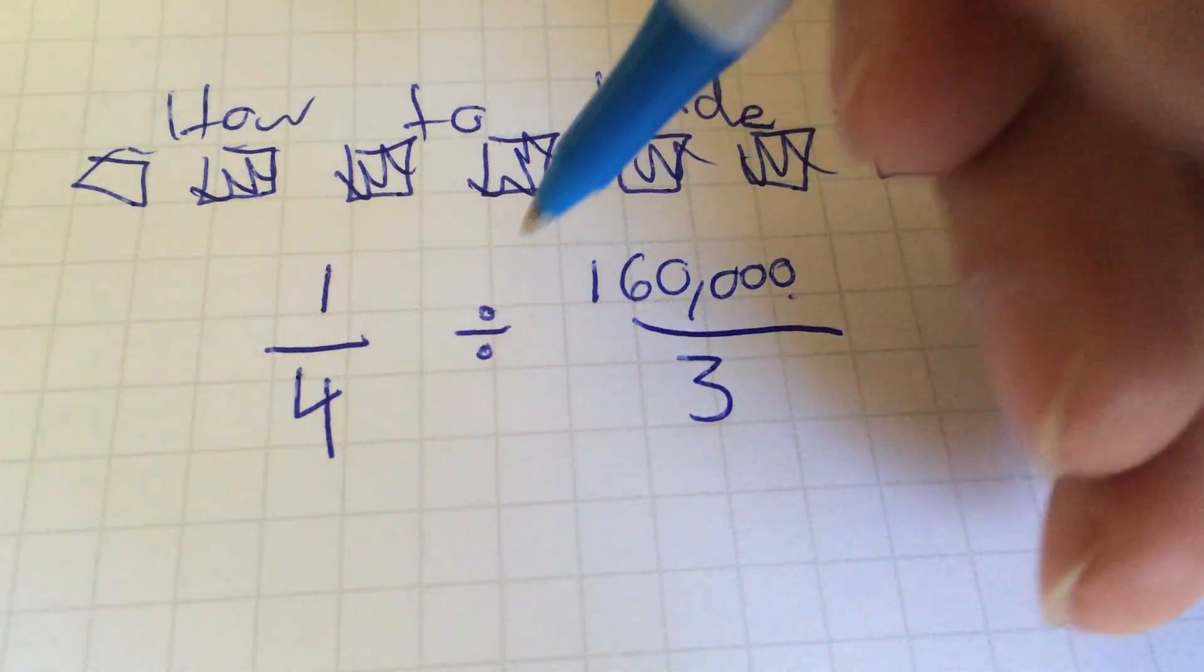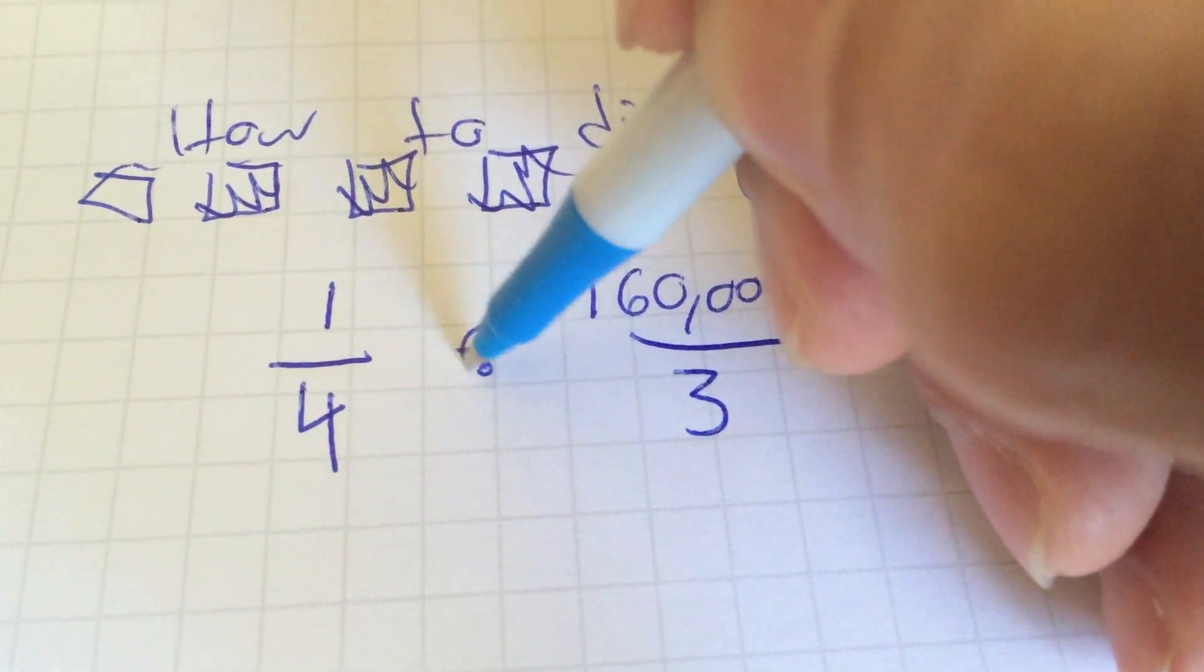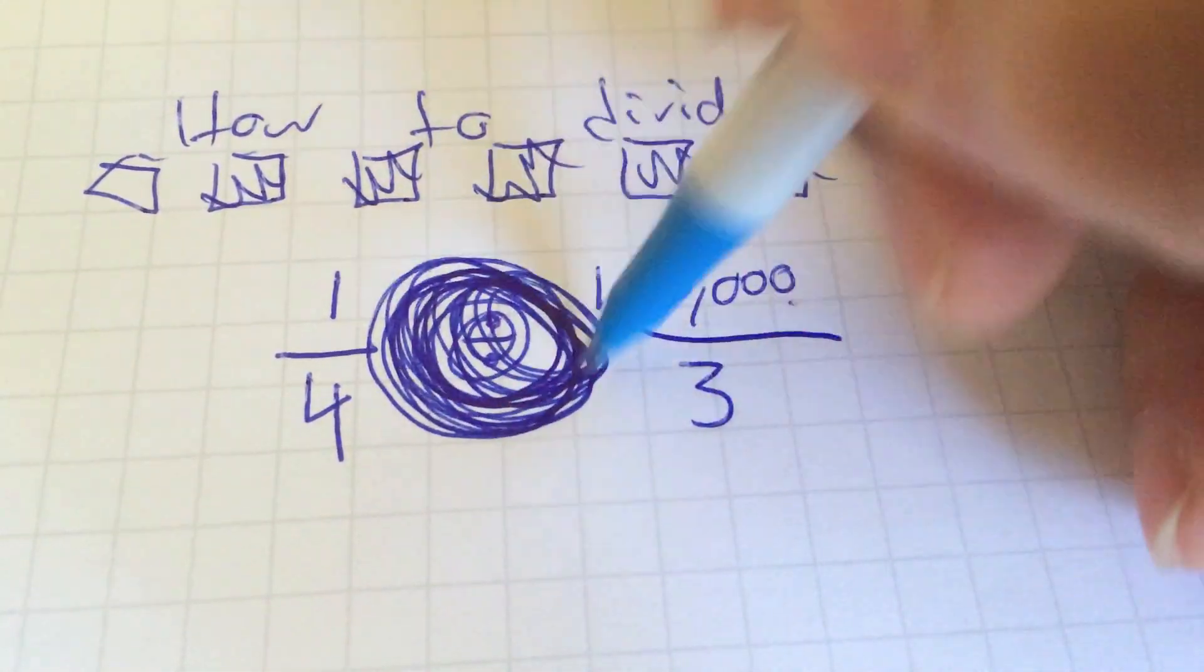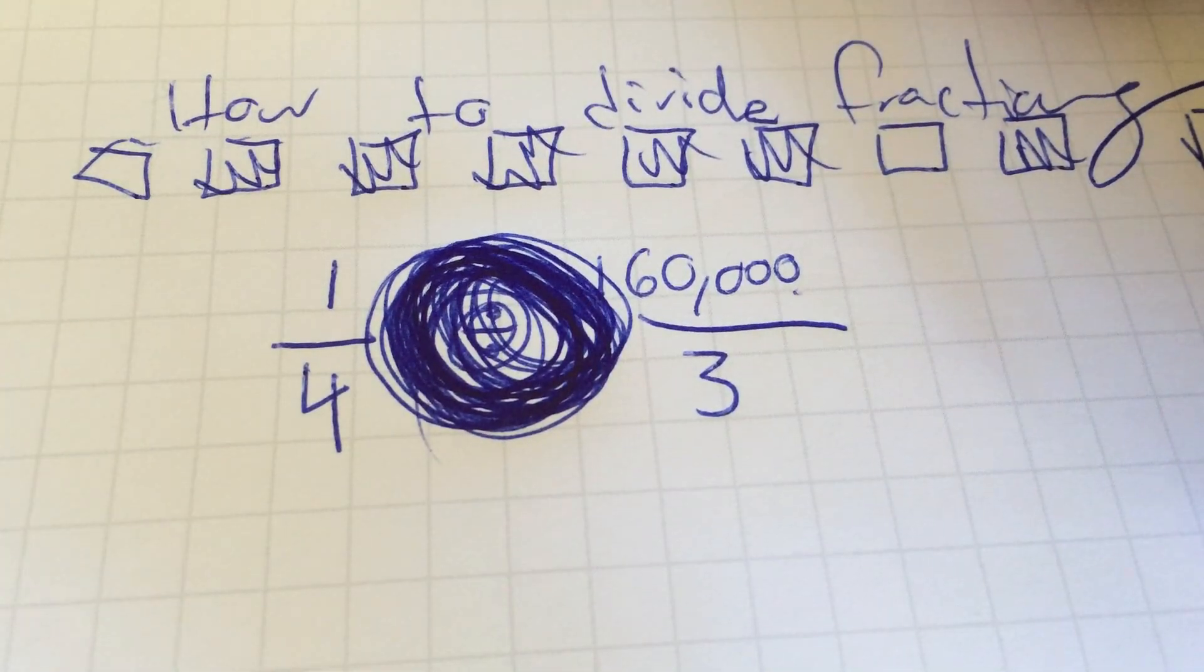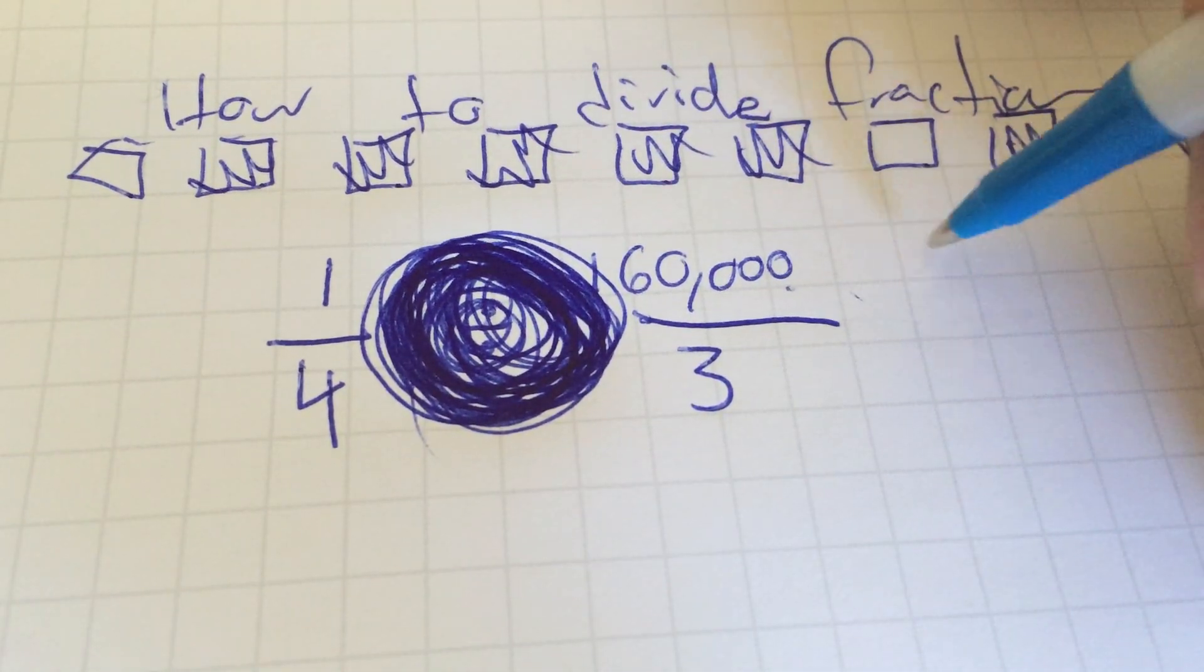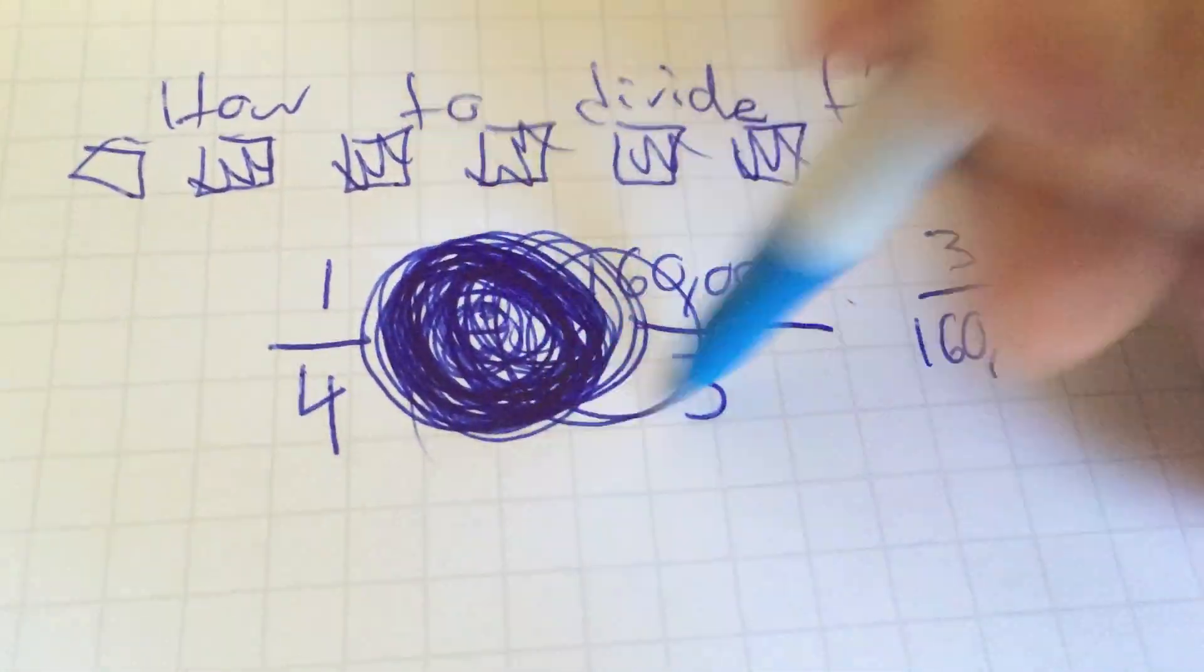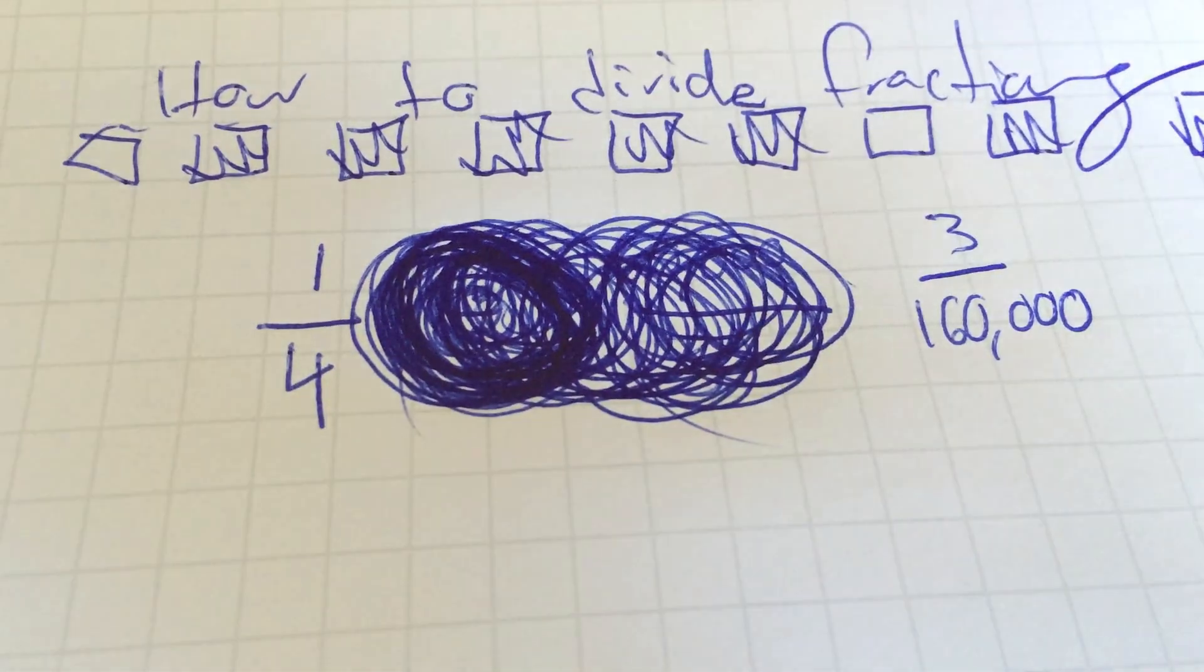An easy way I remember that is I put my pen on the division dot here, and I just draw a giant cylindrical, like a circular, like a vortex or a tornado, which just reminds me to spin it around. So that just means the second number gets flipped. We'll put three over 160,000. And once we've done that, we can just keep our vortex going and just destroy that first number, completely obliterate it.